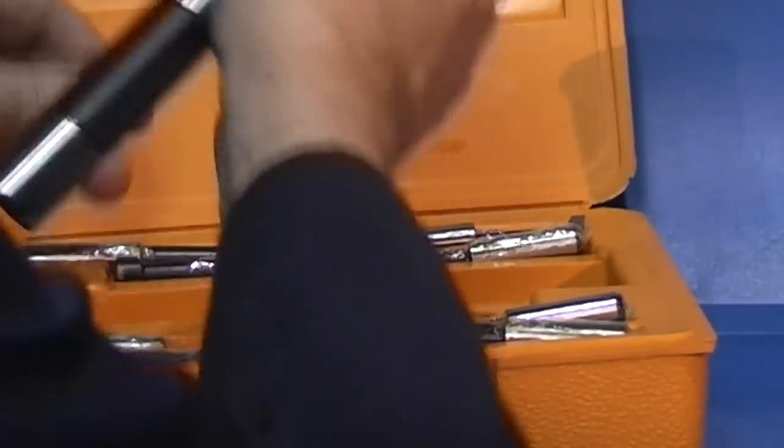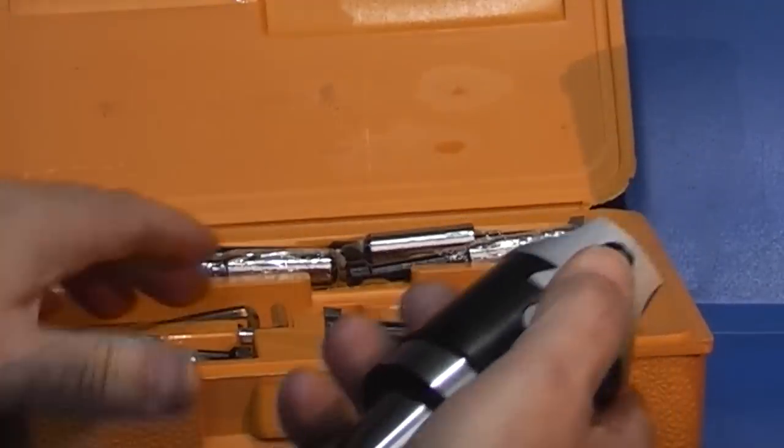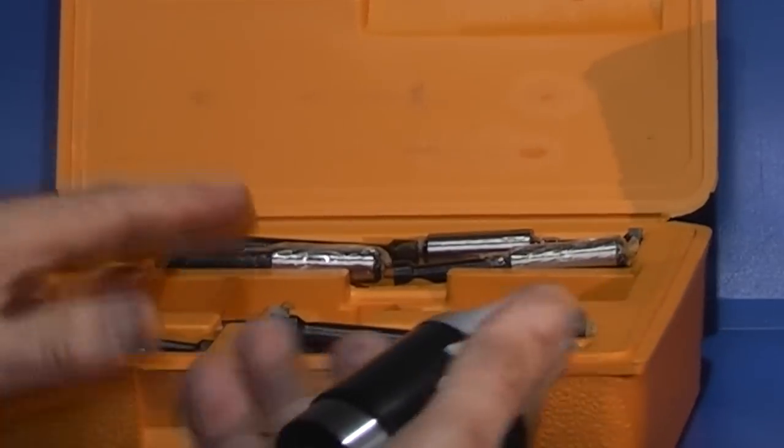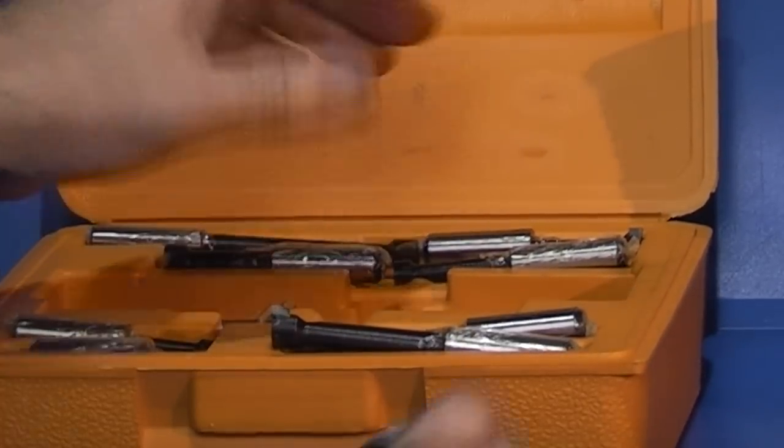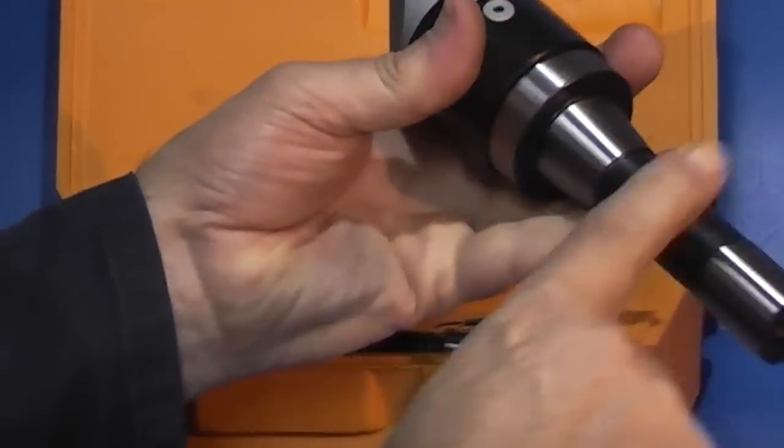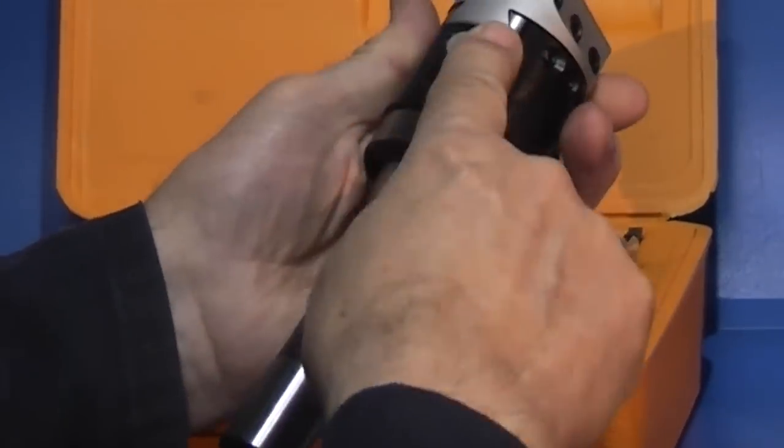The boring head comes in a plastic box. You get nine boring tools with this kit, an arbor - this is an R8 arbor - and the head.